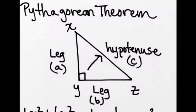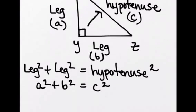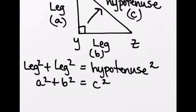And the Pythagorean theorem states that if we take the measurement of a leg and square it, and add it to the measurement of the other leg and square it, it's going to equal the measurement of the hypotenuse side squared. So in other words, leg squared plus leg squared equals hypotenuse squared.